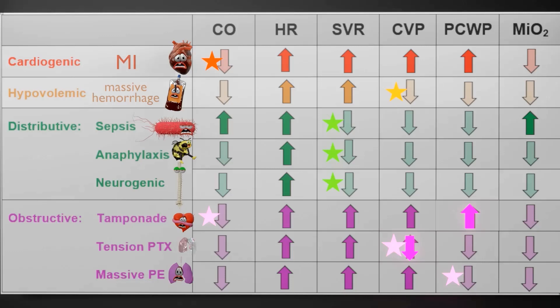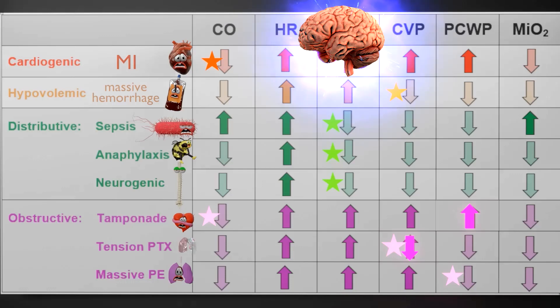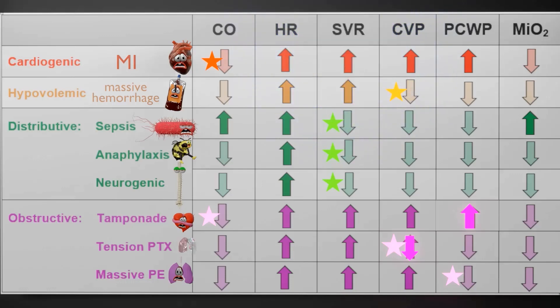Now that there's reduced cardiac output, the heart will try to compensate by increasing heart rate. Similarly, SVR — systemic vascular resistance — will be increased. Increased SVR, i.e. vasoconstriction of the veins, is another compensatory mechanism due to the decreased cardiac output. The body responds this way to help preserve blood flow to vital organs. So SVR is increased, and CVP — central venous pressure — is also increased.